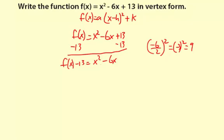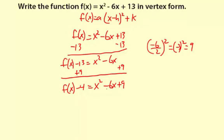So we'll have f(x) - 13 + 9 on the left side. -13 + 9 is -4, giving us f(x) - 4 = x² - 6x + 9.